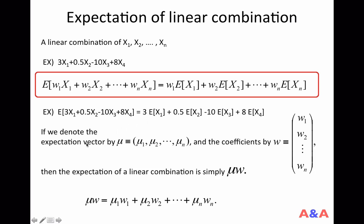Using vector notation, the right-hand side of this formula can be expressed in a compact way. Define μ as the vector of expectations: μ1 = E[X1], μ2 = E[X2], … μn = E[Xn]. Also define w as the vector of coefficients — so w1 = 3, w2 = 0.5, w3 = −10, and wn = 8 in this example. Then the right-hand side of the formula is simply μ·w, the inner product of the two vectors.